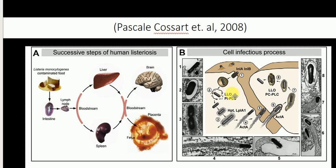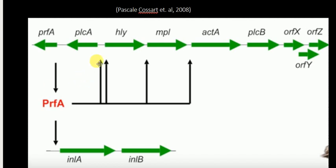Inside the cell, the protein ActA propels the bacteria via actin polymerization and enables invasion of another cell. In the new cell, listeriolysin O helps the bacteria escape the vacuole and become freely available for infection and replication. The three main virulence factors — ActA, internalin A, and internalin B — are all co-regulated by one protein named PrfA, which is why PrfA is also a critically important protein in Listeria pathogenesis. Thank you very much.